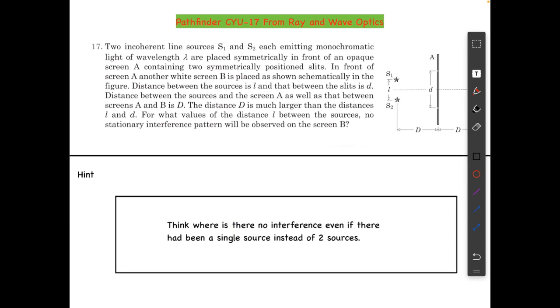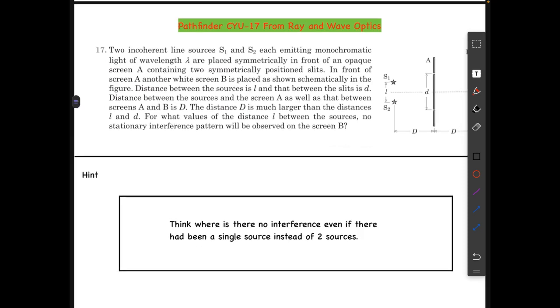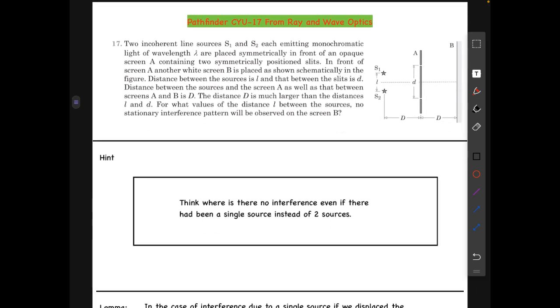Now let's look at the solution. First of all, we need to be very clear with the definition of coherent and incoherent sources. What do we mean by coherent sources? Two coherent sources are those in which the phase difference between the lights emitted is constant with time.